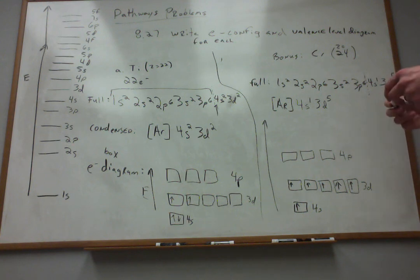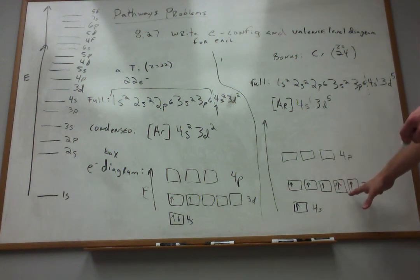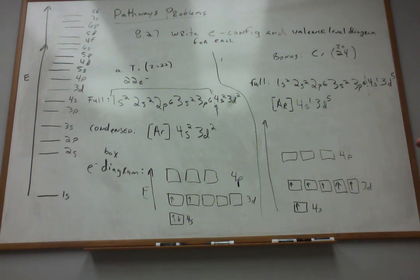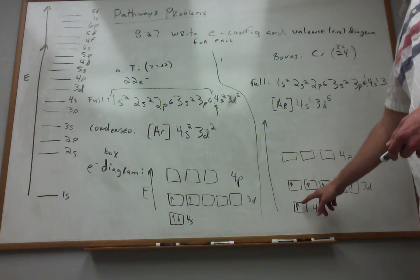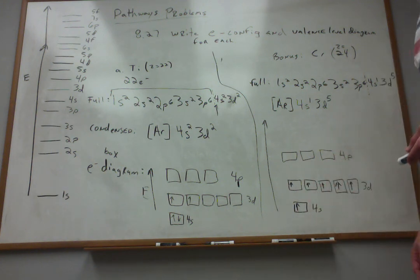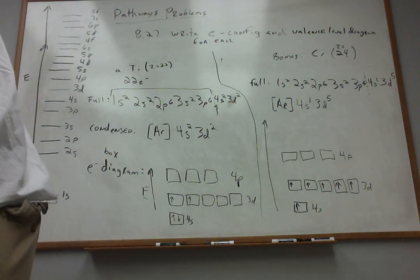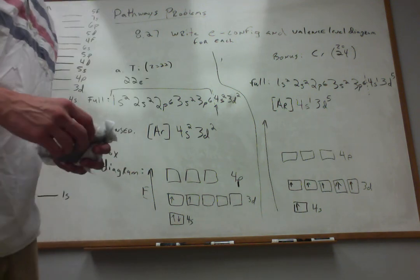This is a quirky exception, but you just have to remember that it happens and watch for it in the columns headed by chromium and by silver, which is five blocks to the right on the periodic table. For chromium, the half-filled set of d orbitals is more stable than having a vacancy. For silver, a similar thing happens — an electron is taken from the s orbital to complete the d orbitals. Familiarize yourself with these exceptions so you can recognize and expect them.